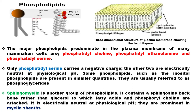The myelin sheath ensures that electrical signals being sent along the nerve are insulated, preventing transmission loss. So this myelin sheet covers and insulates the nerves, and the phospholipids predominantly found in the myelin sheet membrane are sphingomyelin.